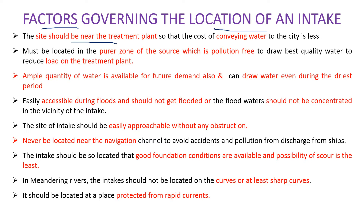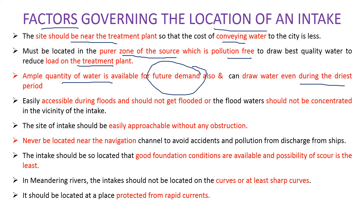First, the site should be nearer to the water treatment plant so that the cost of conveying water remains less. Next, it should be in the pure zone of the source, which is pollution-free, to reduce the treatment load. An ample quantity of water should be available for future demand and even during the driest period. Also, it should be easily accessible during floods and should not get flooded, as that would hamper the water supply scheme.